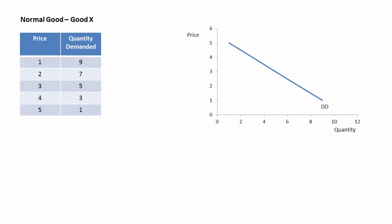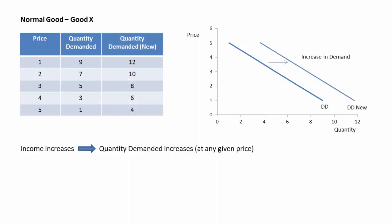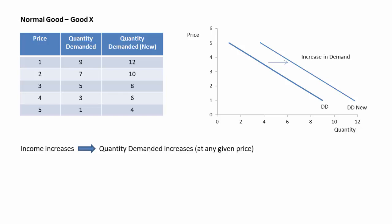Let us now discuss how the income of a consumer affects his demand behavior. Let's say we have a normal good, good X, with the following demand schedule and demand curve. Because good X is a normal good, when the income of a consumer increases, at any given price he would now purchase a larger quantity. This means the quantity demanded will increase at all price levels, and we will get a new demand schedule and a new demand curve. The entire relationship between price and quantity demanded has changed — this is a case of change in demand. The demand curve for good X has shifted to the right from DD to DD new, and we call it an increase in demand.